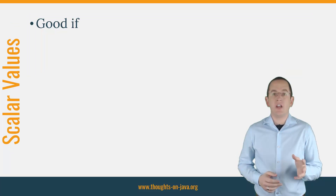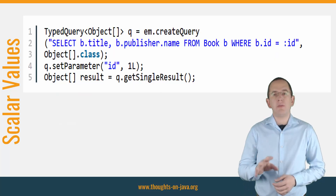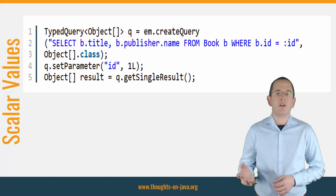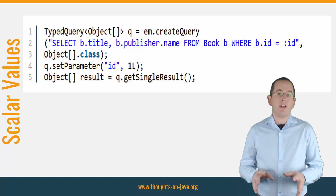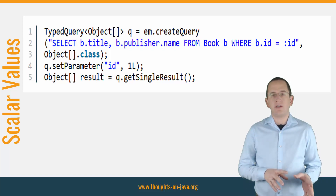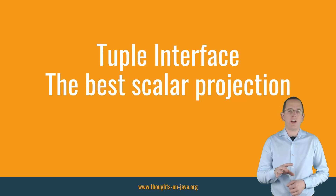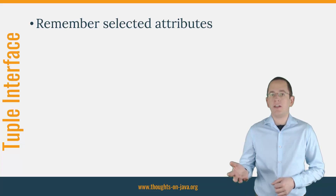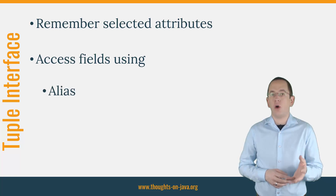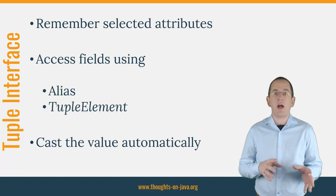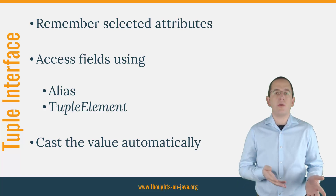Scalar values can be a good projection if you need to read a few columns that you want to process immediately and you don't have a matching DTO class for them. The main problem with this projection is that it's very uncomfortable to use. By default, a query that uses a Scalar Projection returns an object array. You then need to remember the order and types of the selected database columns and handle the object array accordingly. The tuple interface provides a better way to work with Scalar Projections. You still need to remember which entity attributes you selected, but in contrast to an object array, you can access the fields using an alias or a tuple element and you can cast the value automatically. That's still not as comfortable as a DTO projection, but much better than working with a basic object array.